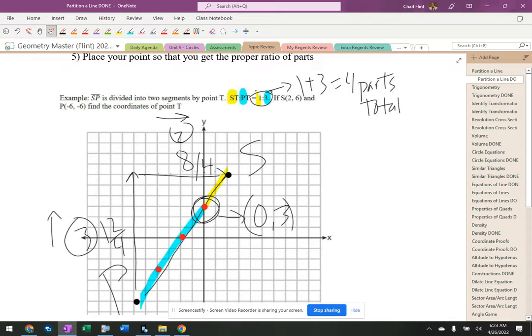is equal to one to three. So I like to highlight them in two different colors for when I identify my line, and it says if S is (2,6) and P is (-6,6), find the coordinate of point T.